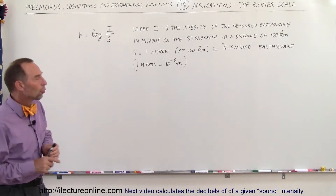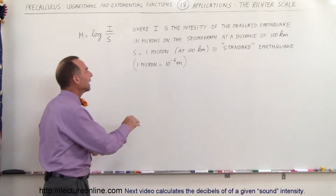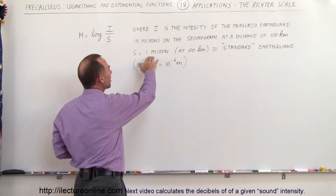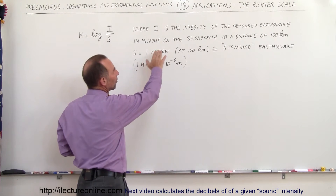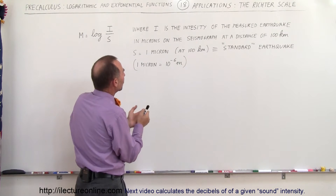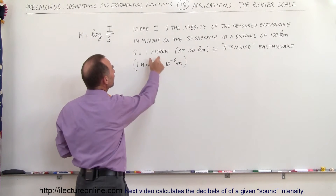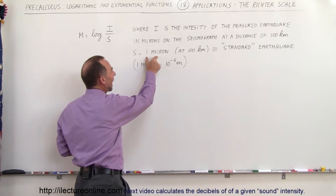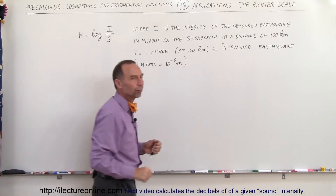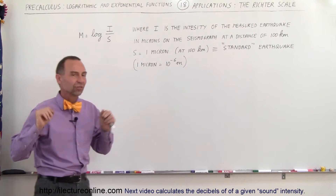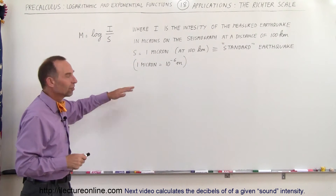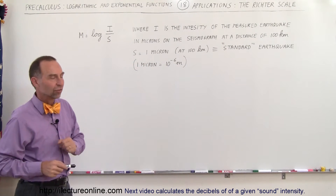The intensity of a standard earthquake is a measurement from what we call the seismograph of one micron at a distance of 100 kilometers from the earthquake — that's considered the standard. A micron is 10 to the minus 6 meters.